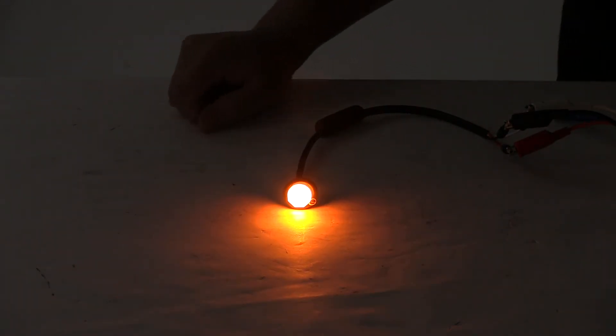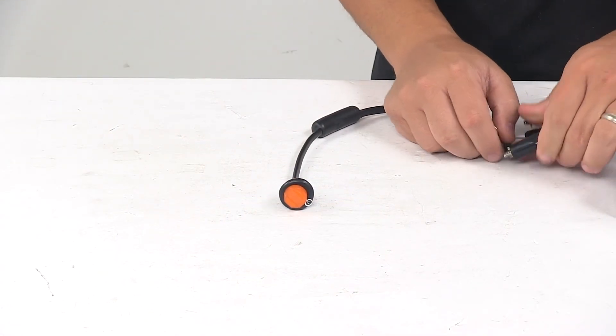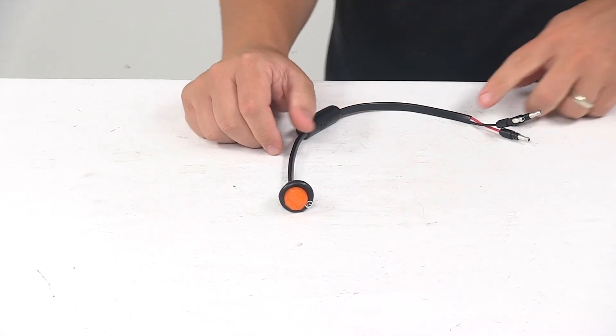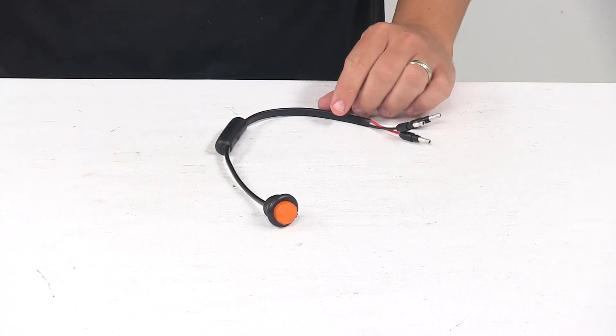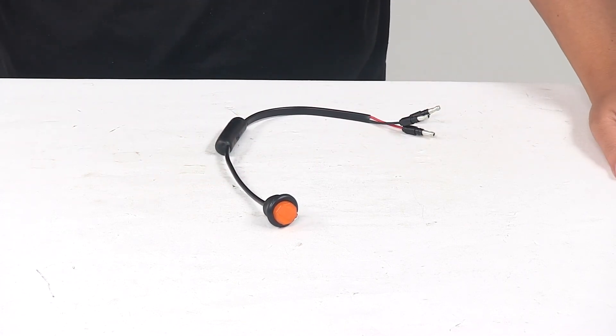Optronix also puts a lifetime warranty on their LEDs. And that's going to do it for today's look at the Optronix GlowLight Unilight LED Amber Clearance or Side Marker Light.